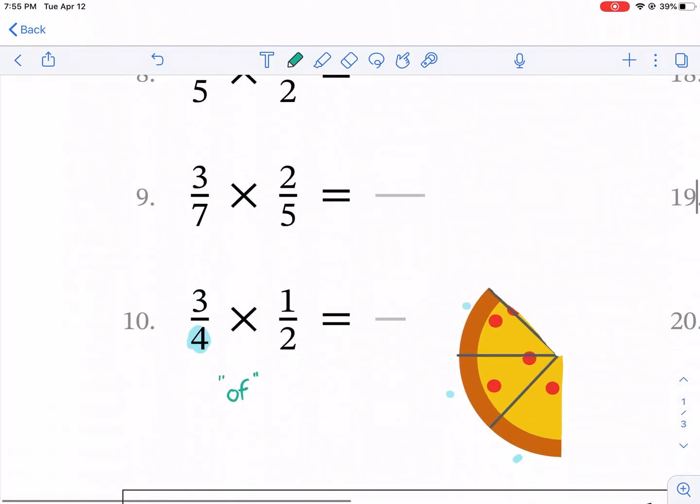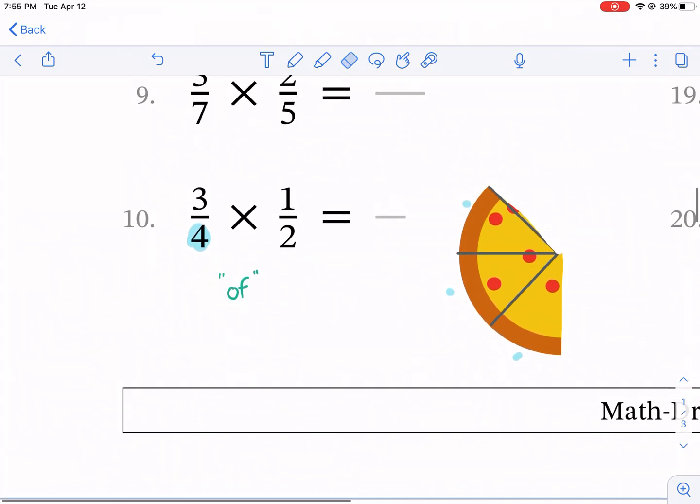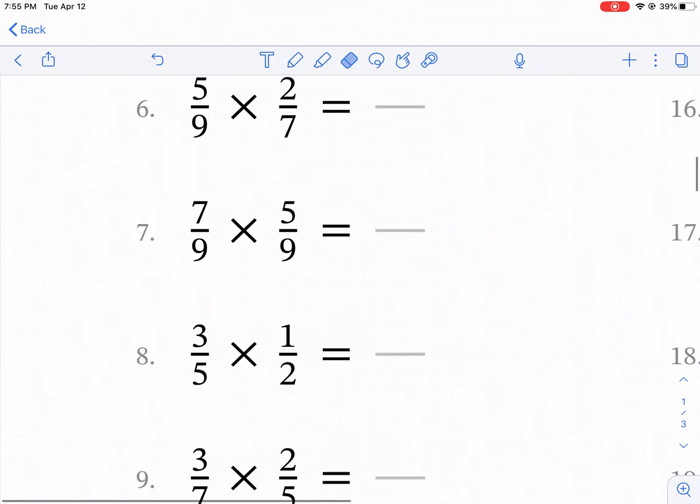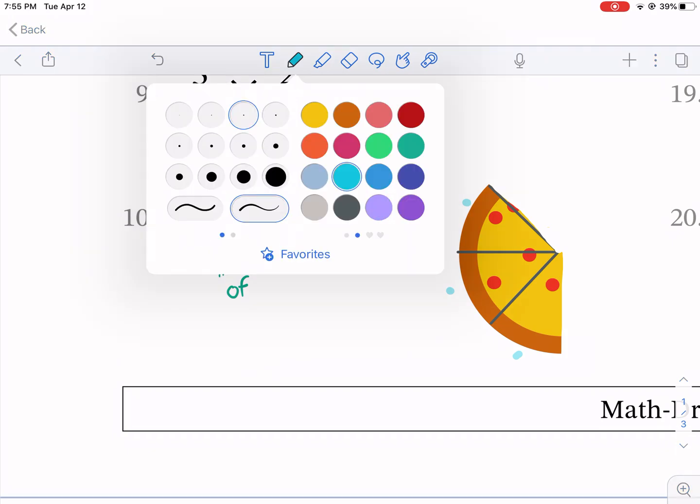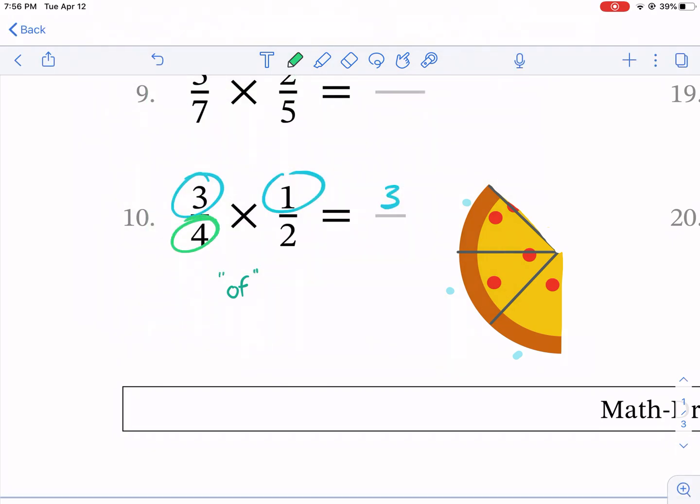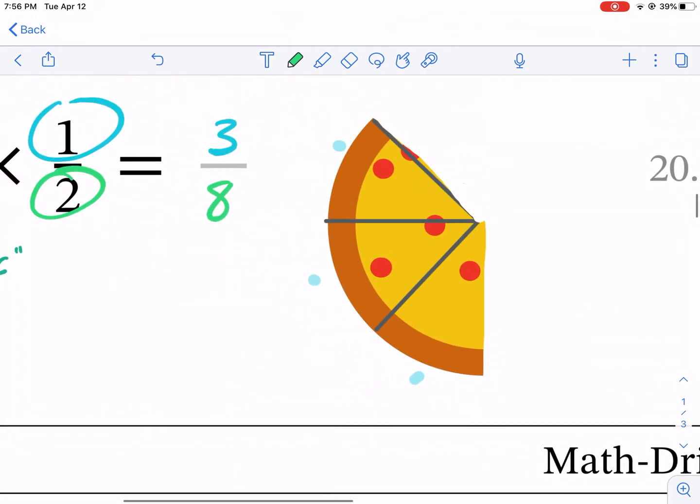So the numerators multiplied together, that's the top numbers. That would be the 3 times the 1. What color did I use? I think blue. I'm going to trust that I use blue. So blue here, I'm going to multiply 3 times 1, and that gives me 3. And then for the bottom times the bottom, that's the denominator, 4 times 2, that is 8.